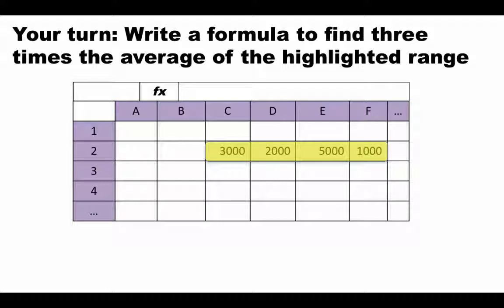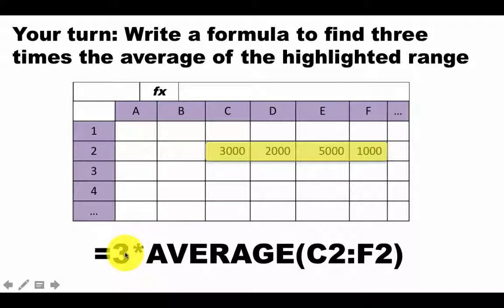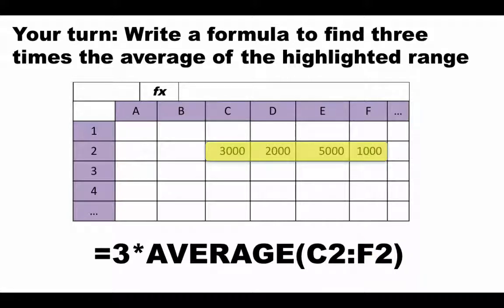So of course we want three times the average. One part of it is going to be AVERAGE(C2:F2). And if you want three times, just multiply it by three. So just say equals three times the average of C2:F2. Even though I have not taught you how to do this, you should be able to make these kinds of inferences and take a shot at it.